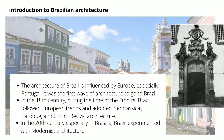These colonial-style buildings give the country a really charming element. In the 18th century, during the time of the empire, Brazil followed European trends and adopted neoclassical, Baroque, and Gothic revival architecture. In the 20th century, especially in Brasilia, Brazil experimented with modernist architecture. This style became more popular around the end of World War II when function was more important than form, and remains the overriding architectural style of Brazil.